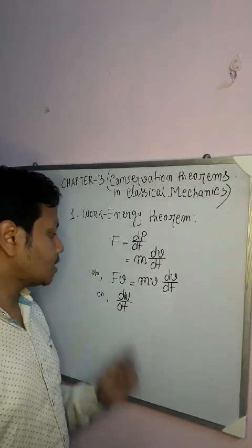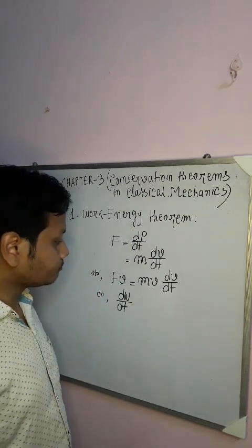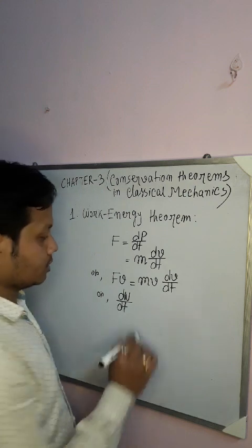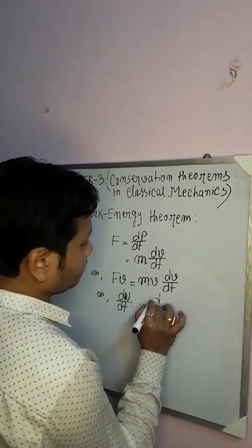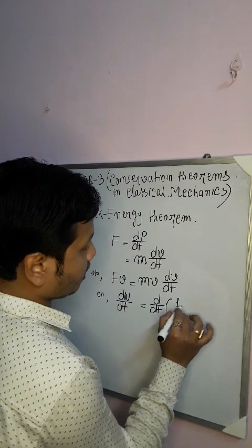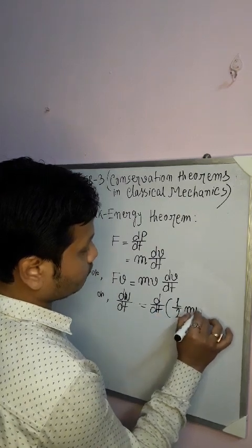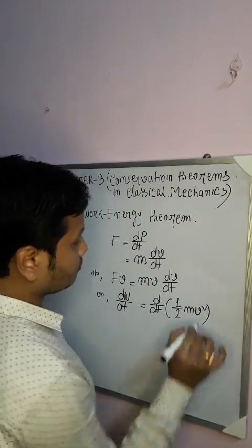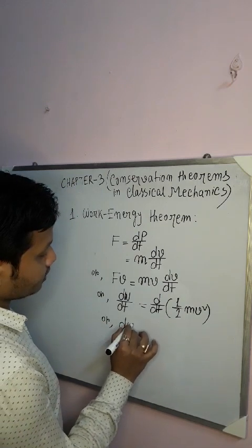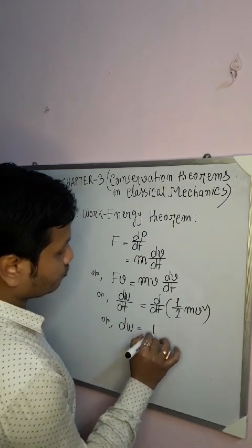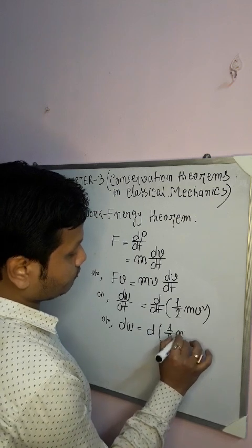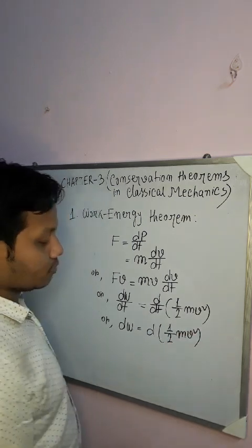So the rate of change of work done, that is dW/dt, equals force multiplied by velocity, which is power. And power is nothing but the rate of change of work done. This can be written as d/dt of (½mv²). So we can write dW equals d(½mv²).